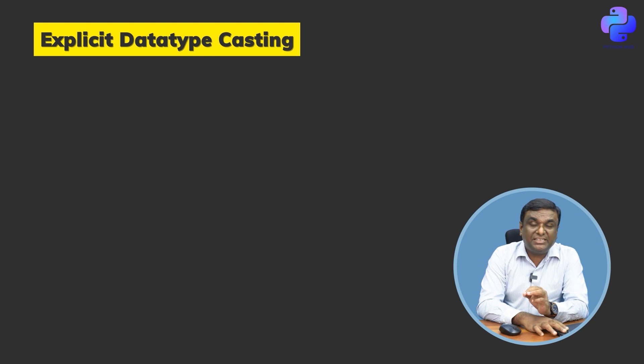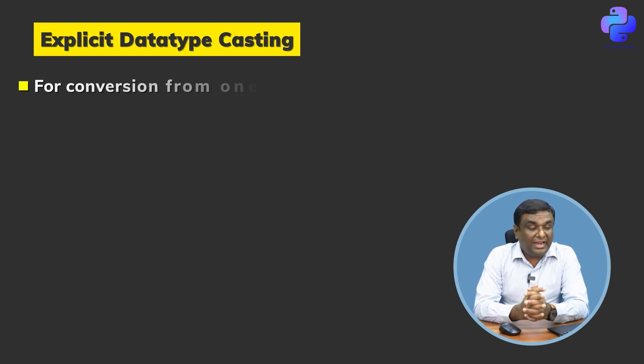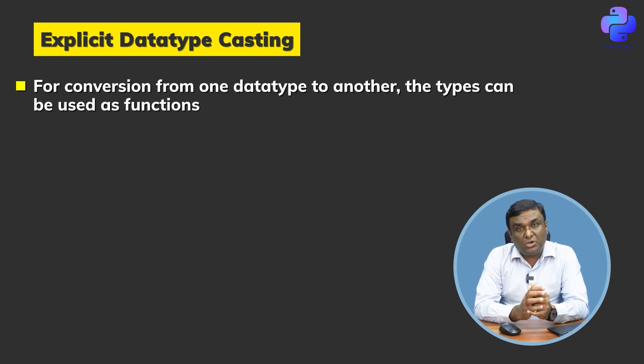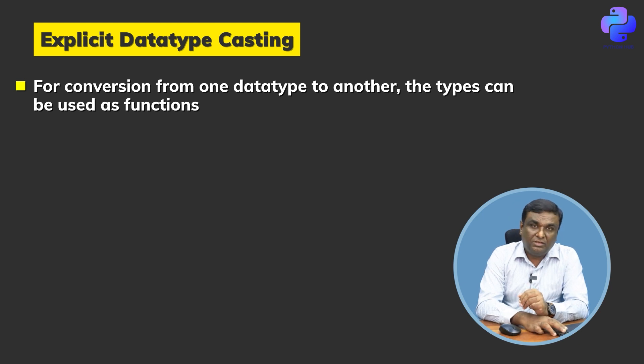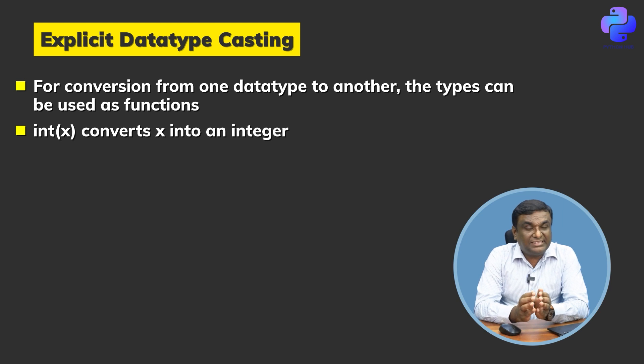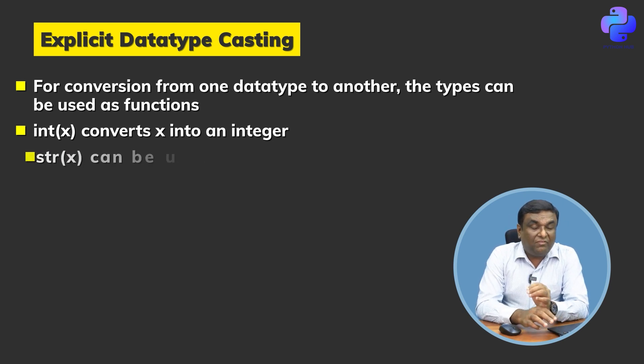Moving on, there's a second type of casting called explicit data type casting, where we use functions to change one data type to another by explicitly calling it out. So I can convert int(x) - that is, integer is a function and I'm passing x as a variable to it, and that will convert x into an integer regardless of what data type it is.